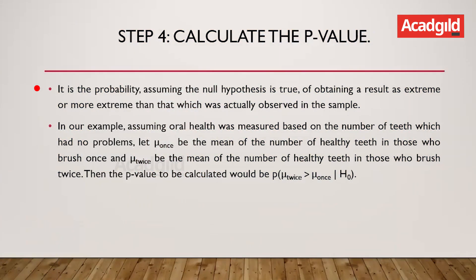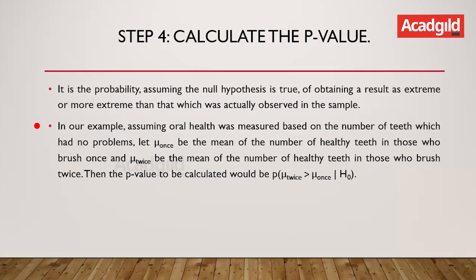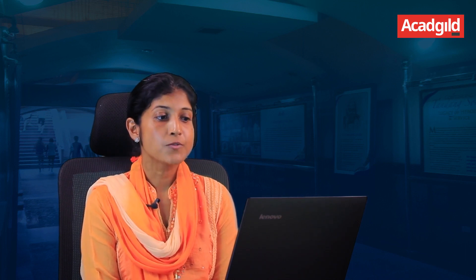Step four is to calculate the p-value. The p-value is the probability of observing an effect at least as extreme as the one observed using the sample, assuming the null hypothesis is true. It is a conditional probability of observing an effect as strong as what we observe in the sample if the null hypothesis is true. In our example, if mu_once denotes the mean oral health of children who brush once and mu_twice represents children who brush twice, the p-value would be the probability of mu_twice being greater than mu_once given the null hypothesis is true.